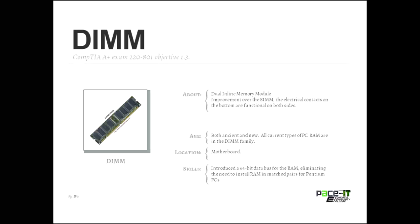One thing DIMMs also introduced was the 64-bit data bus for RAM. In early Pentium PCs, memory modules had to be installed in pairs because they required a 64-bit bus. With the advent of DIMMs, you didn't have to put in matched pairs anymore — you could go back to putting in singles.